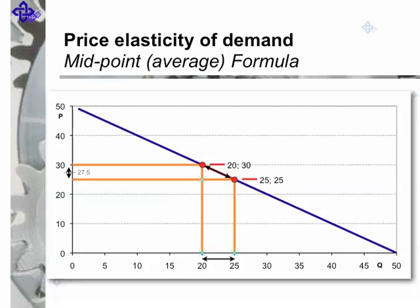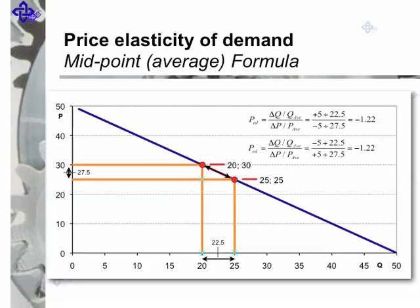The midpoint between 25 and 30 pounds is 27.5, and the midpoint between 20 and 25 is 22.5. Relate the change of plus or minus 5 to this midpoint, and you get a similar result either way, whether you reduce your price from 30 to 25, or you increase it from 25 up to 30.